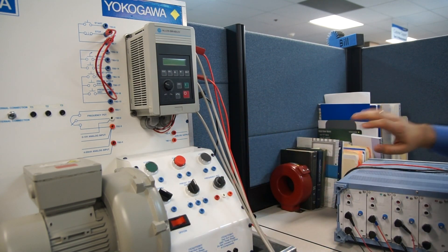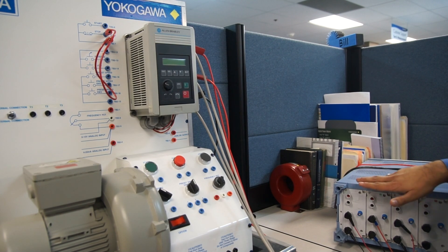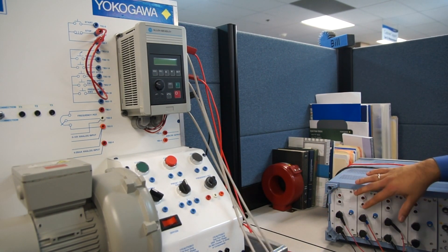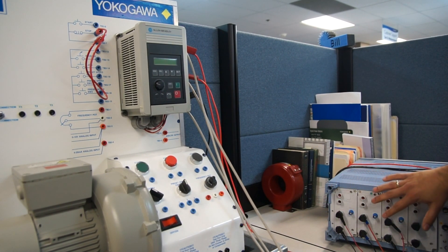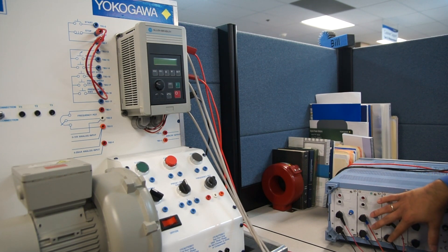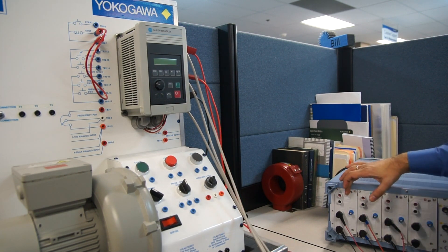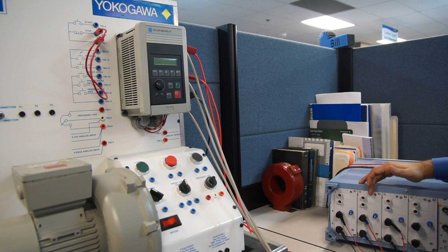I have pre-wired my currents to the power analyzer with phase A positive and negative, phase B positive and negative, and phase C positive and negative. You can see that I have wired phase A to wattmeter one, phase B to wattmeter two, and phase C to wattmeter three.